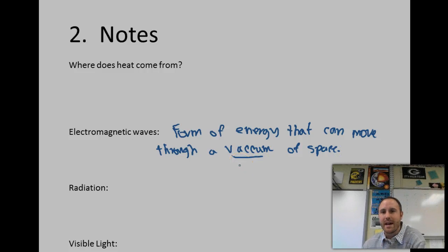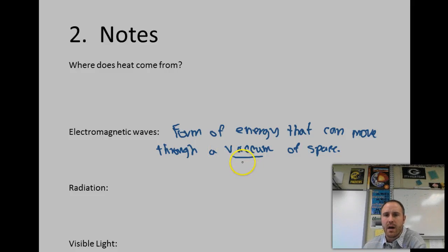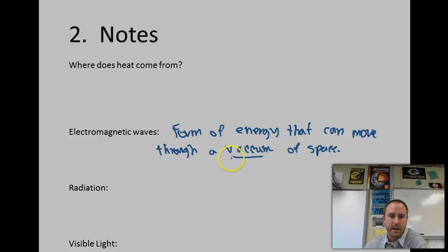When we refer to 'vacuum,' we're not talking about the kind you use to clean your floor — we're talking about a vacuum like outer space. The sun is able to travel through outer space, through the atmosphere, and reach our Earth. All waves, especially electromagnetic waves, are going to be classified based on wavelengths.